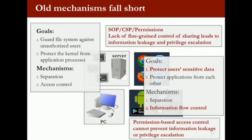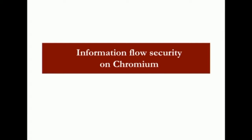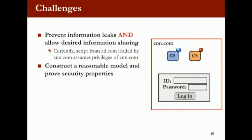Given these scenarios and the additional goals of protecting user's private data, we actually need new mechanisms. In addition to separation and access control, we also want information flow control. All these examples involve more than one step of information being passed around — we want to follow this trace of information and eventually stop the bad flow from harming the user. So I'm going to talk about one specific work that we did on Chromium, which is the open source version of Chrome. What we want to do is prevent information leakage in the browser while also allowing desired information sharing — for example, when I embed a script from ad.com, that script runs as if it's from the same origin as the main page.